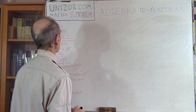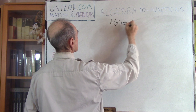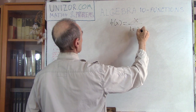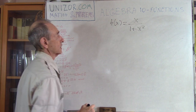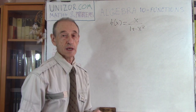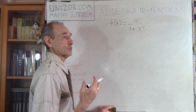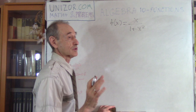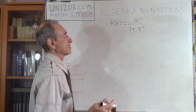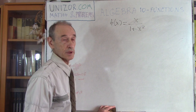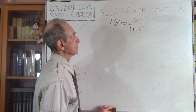Problem number one is to investigate the behavior of the function f(x) = x divided by (1 + x²), and I would like to find out where it's growing, where it's decreasing, increasing, etc. Let's concentrate on the description of how this function works. The graph would probably be very helpful, so let's try to draw it.